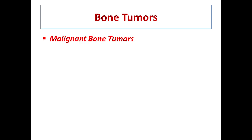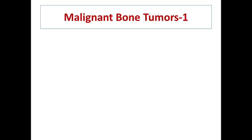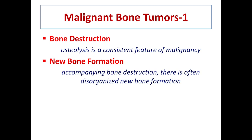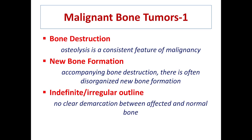Bone tumors may be benign or malignant. It should be clear that, like soft tissue tumors, benign bone tumors have a smooth periosteal lining, while malignant tumors become very irregular in shape and show multiple periosteal reactions. In malignant tumors there will be osteolysis with bone destruction, sometimes disorganized new bone formation, an irregular or indefinite periosteal outline, and no clear demarcation between affected and normal bone.